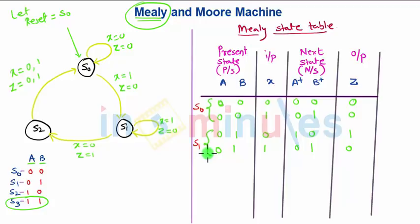Now write for S2. As far as S2 is concerned, S2 corresponds to 1, 0. So for S2 at 1, 0, if input is 0, it will go to S0. That is nothing but the 0, 0 state and output is 0.